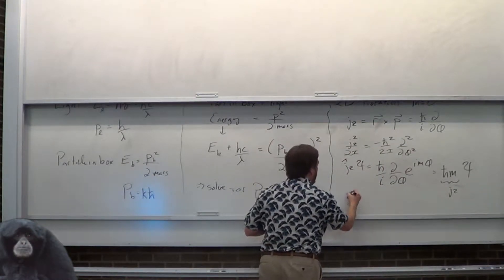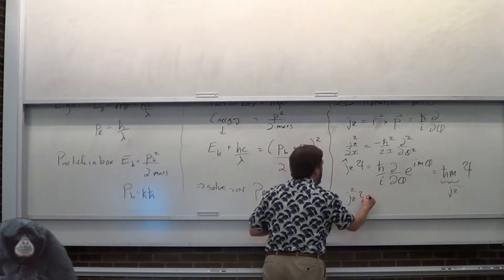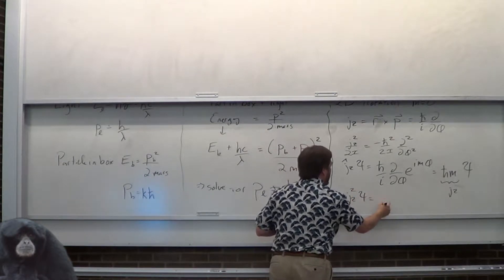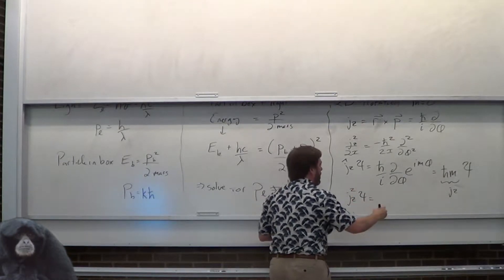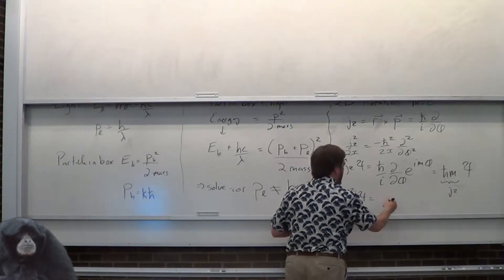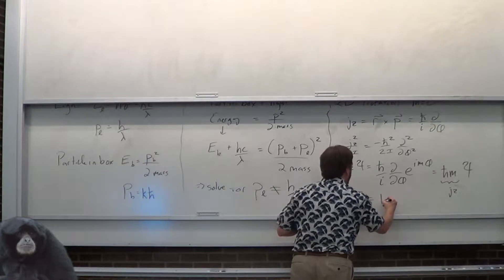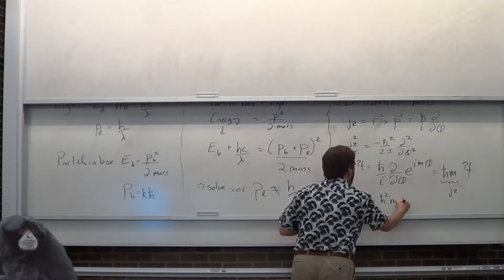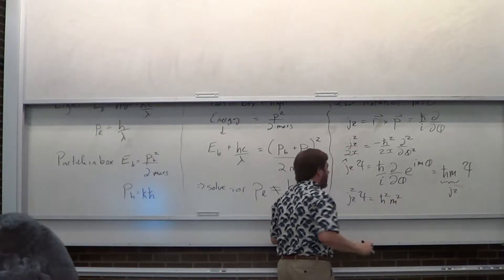If I do J_z squared, I get hbar squared times M squared.